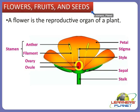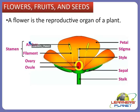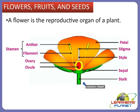Today we will learn about flowers, fruits, and seeds. Another component of the shoot system is the flower. The flower is responsible for seed development and reproduction of the plant. The main flower parts are sepals, petals, stamens, and carpels. The stamen is the male portion of the plant and the carpel is considered the female portion. The flower is the reproductive organ of a plant.